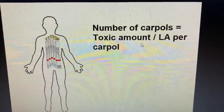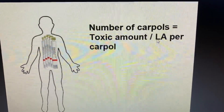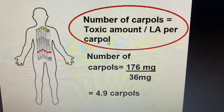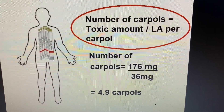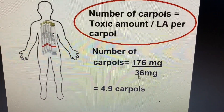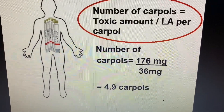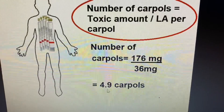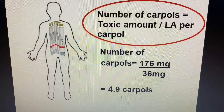The number of carpules equals the toxic amount divided by the local anesthetic agent per carpule. So the number of carpules equals 176 mg divided by 36 mg per 1.8 mL carpule of lidocaine, which means we can give this patient up to 4.9 carpules before reaching the toxic level.